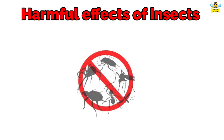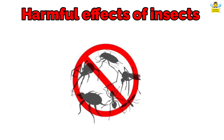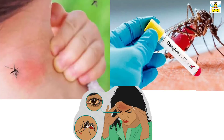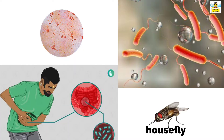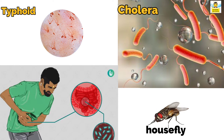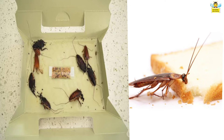Some insects like termites and silverfish eat wood and clothes. Harmful effects of some insects: mosquitoes cause diseases such as malaria, dengue and yellow fever. A housefly is a carrier of diseases such as typhoid, cholera and dysentery. Cockroaches destroy papers and food materials.